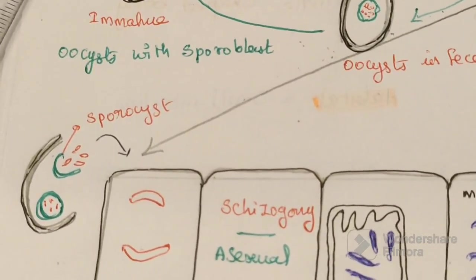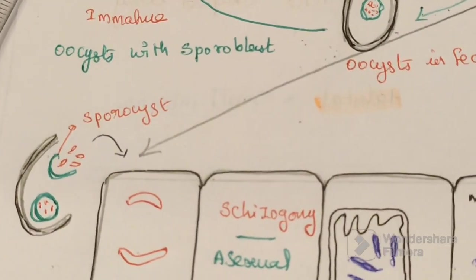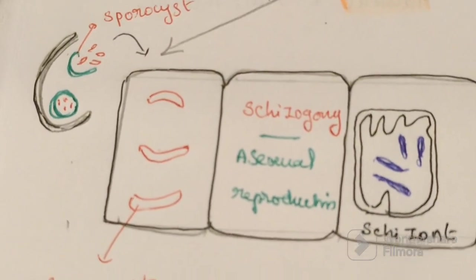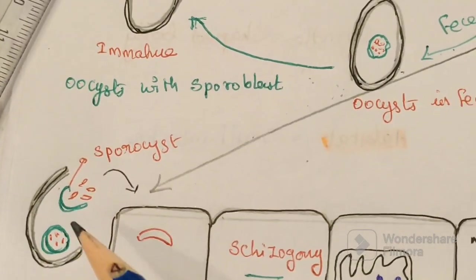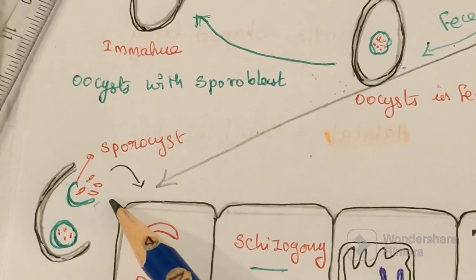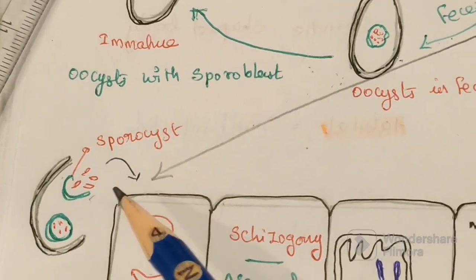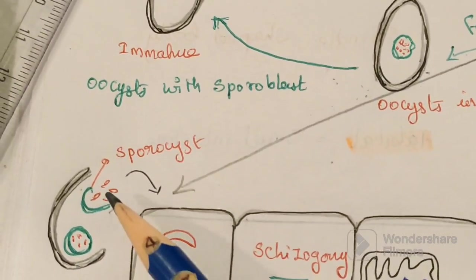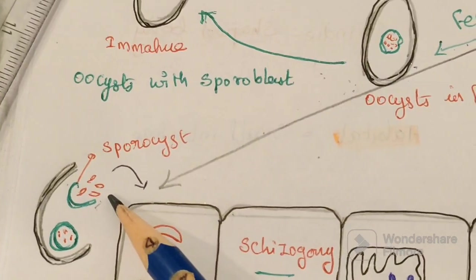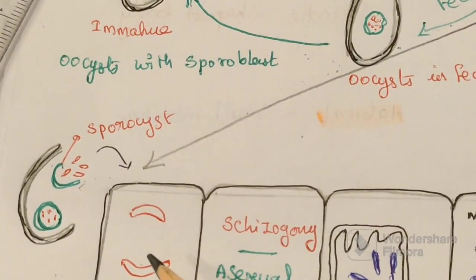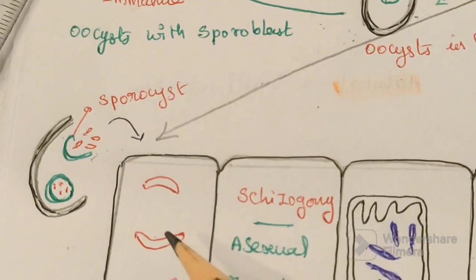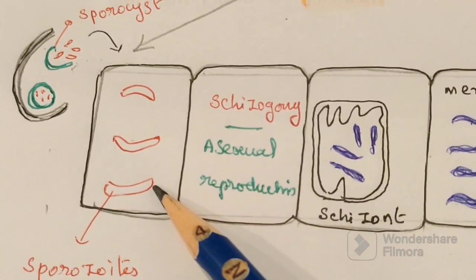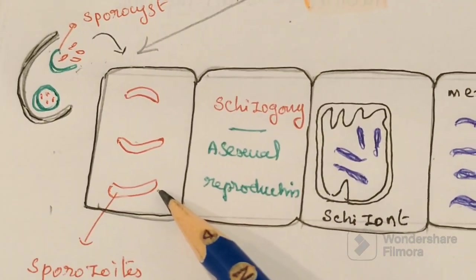The oocyst attaches to the surface of the epithelial cell. The cyst wall gets ruptured, and along with it, the sporocyst wall also ruptures. Each sporocyst contains four sporozoites, and these sporozoites protrude out and are released. They then enter the epithelial cell of the human digestive system.